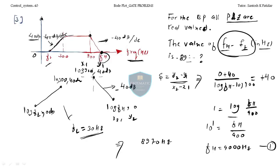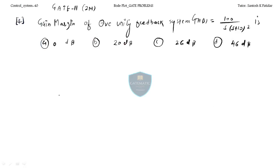The answer is 8970 Hz. Now let us come to the next question: find the gain margin of a negative unity feedback system whose G(s)H(s) is given as 100 divided by s(s+10)². You have four options — be careful, this is a 2-mark problem with negative marking.